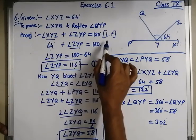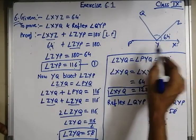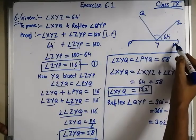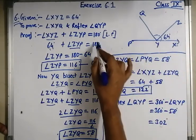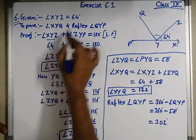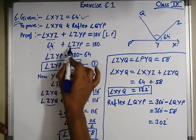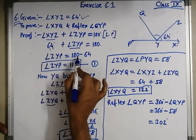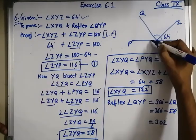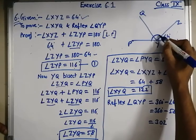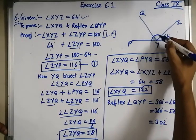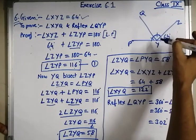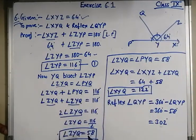Proof. First we will use linear pair on line PX. Angle XYZ plus angle ZYP is equal to 180 degrees, linear pair. The value of XYZ is already given as 64 degrees. So angle ZYP is equal to 180 minus 64. Angle ZYP is 116 degrees. This angle is total 116 degrees.